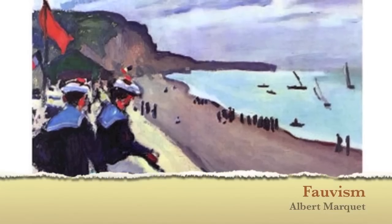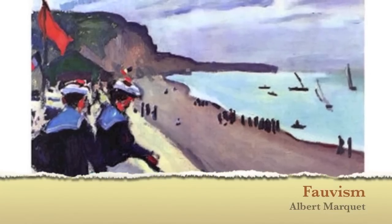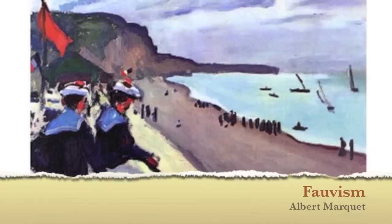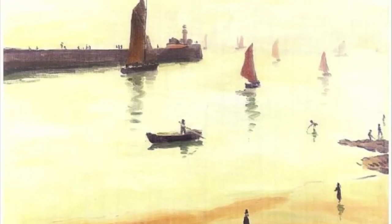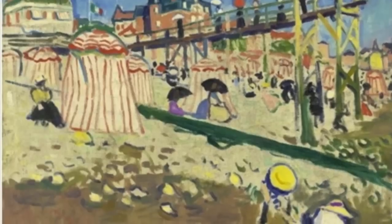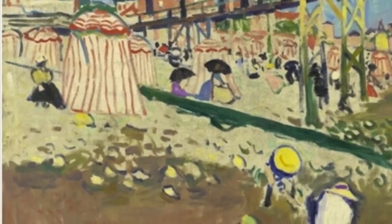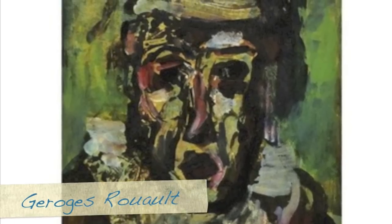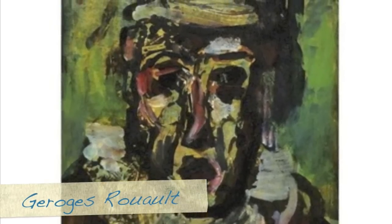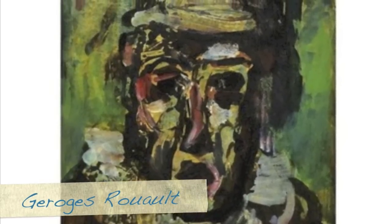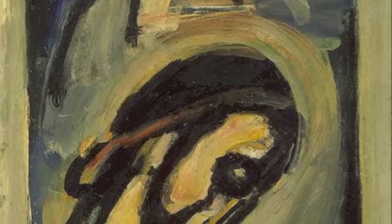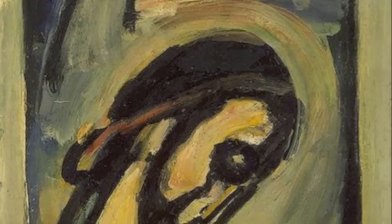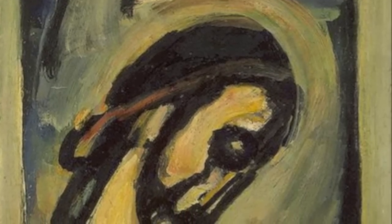The paintings of the Fauves were characterized by seemingly wild brushstrokes and strident colors, while their subject matter had a high degree of simplification and abstraction. It can be classified as an extreme development of post-Impressionism mixed with Pointillism.